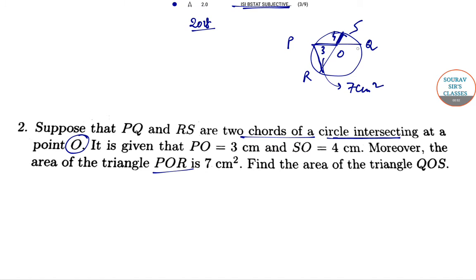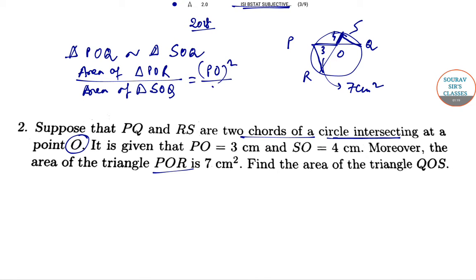Now, QOS is this triangle. So we have formational structure, these two triangles to each other. So area of the triangle POR divided by area of triangle SOQ is nothing but PO squared by SO squared according to the rule. So this is 9 by 16.